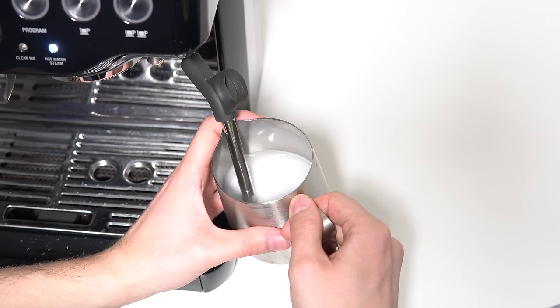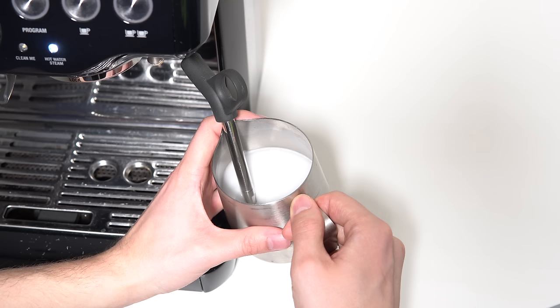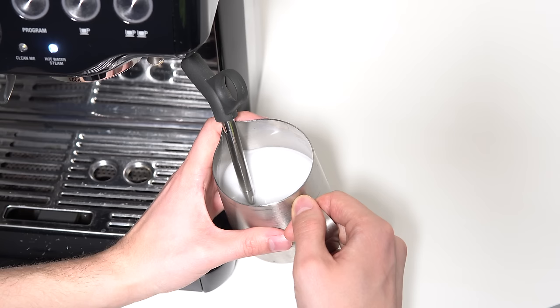This is another great advantage of using water and soap to practice, because you can visually see the point where the air introduction starts to happen. When you're using milk, you'll need to rely more on sound. This ripping sound is what you're aiming for.